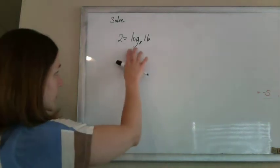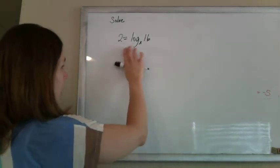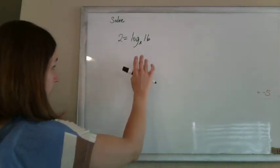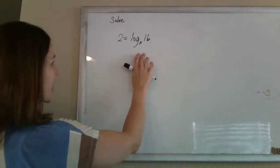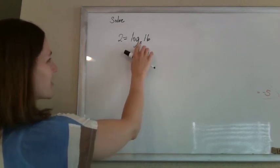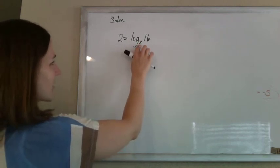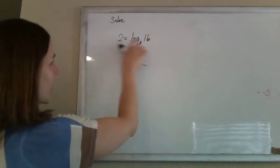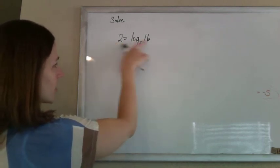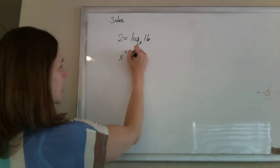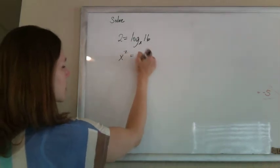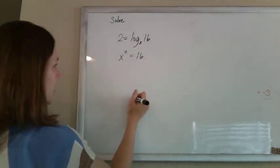Alright, so again, undo a log by rewriting it in exponential form. So the base x to the power 2 should equal 16. So x squared should equal 16.